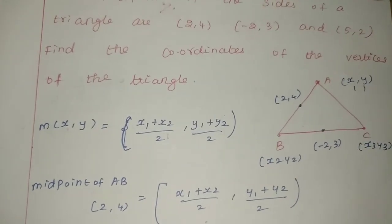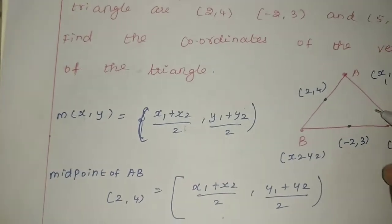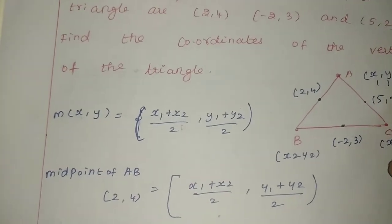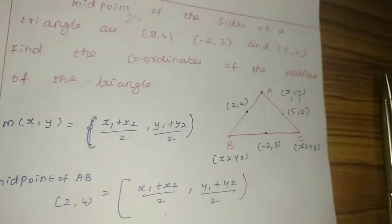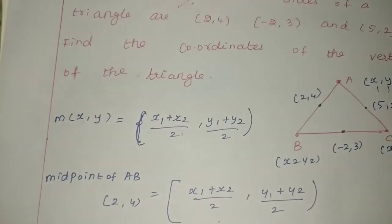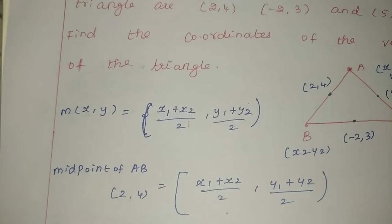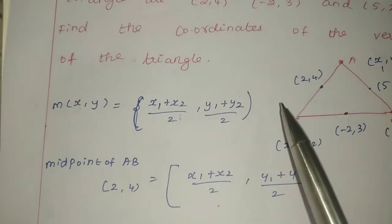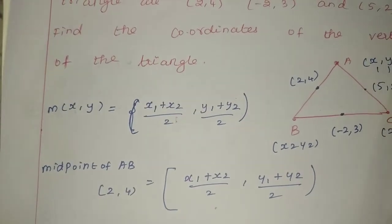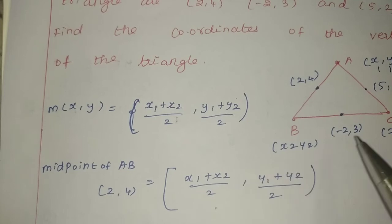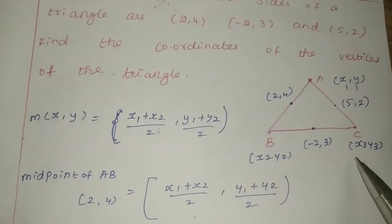We have a triangle ABC. The vertices are A with coordinates (x1, y1), B with (x2, y2), and C with (x3, y3).